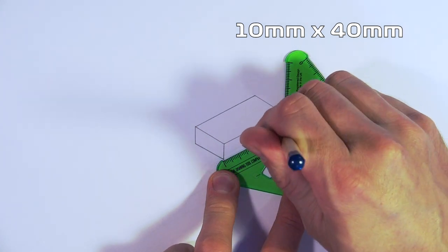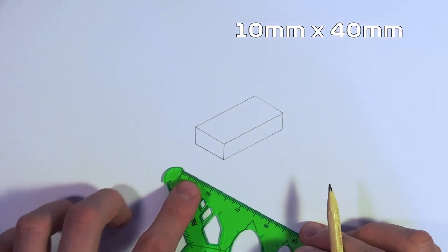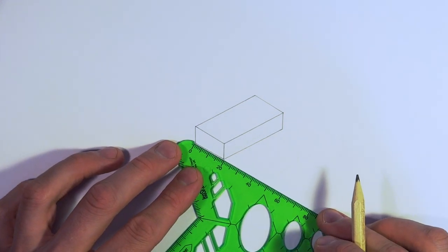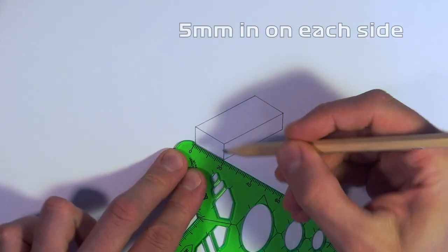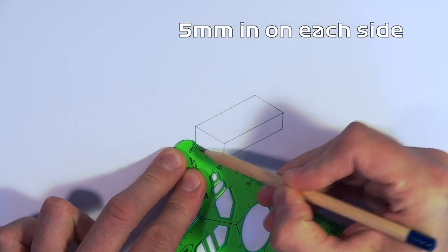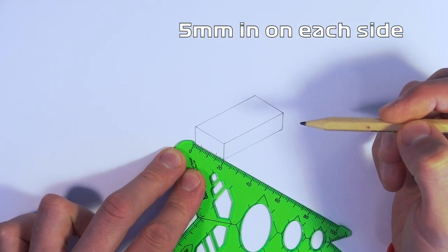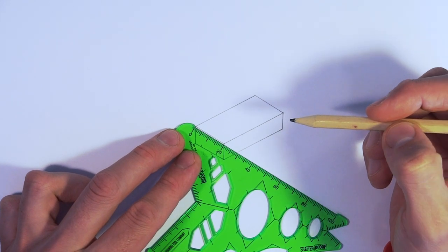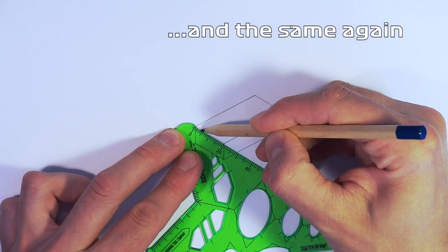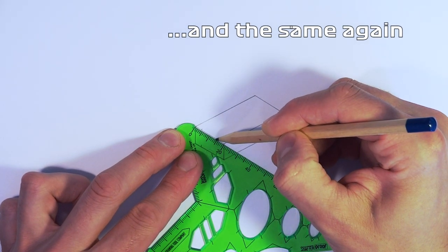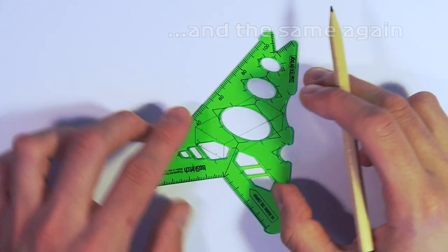We're just going to join this line up and you can see on the screen it's 10 millimeters down, 40 millimeters across. What we're going to do now is mark 5 millimeters in from each side on this bottom line, using the ruler edge marking 5 millimeters in on both the top and bottom of this end of our chassis block.